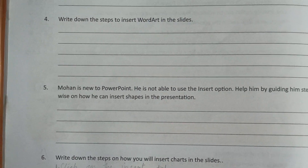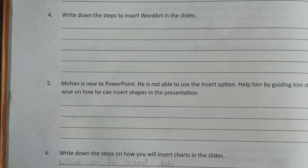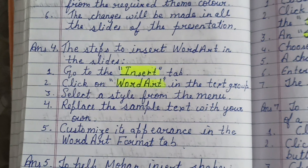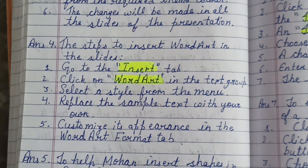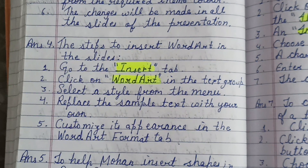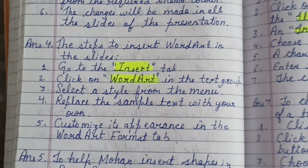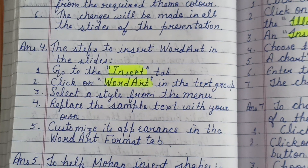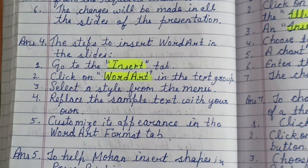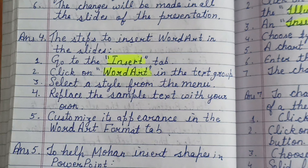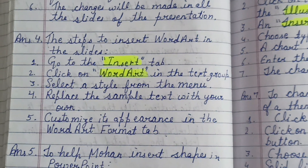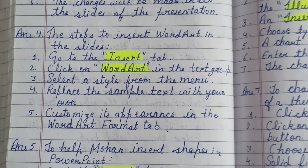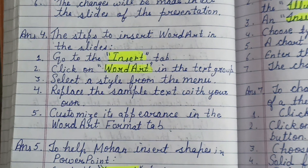Question four: Write down the steps to insert Word Art in the slides. Steps to insert Word Art: number one, go to the Insert tab; number two, click on Word Art in the Text group; number three, select a style from the menu; number four, replace the sample text with your own; number five, customize its appearance in the Word Art Format tab.